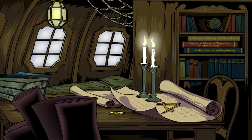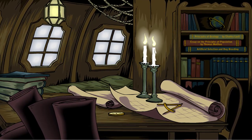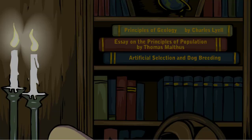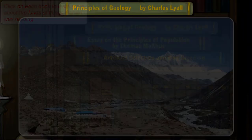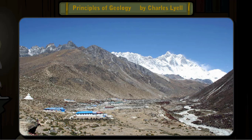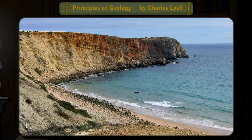During Darwin's trip, several ideas were already helping to shape his thoughts as he made his observations in the various destinations of the HMS Beagle. In this book, Lyell describes how the physical structure of the Earth that we see today is largely the result of gradual change over millions of years. This idea suggested that there would be plenty of time for many generations of organisms to be born, live, reproduce, and die.